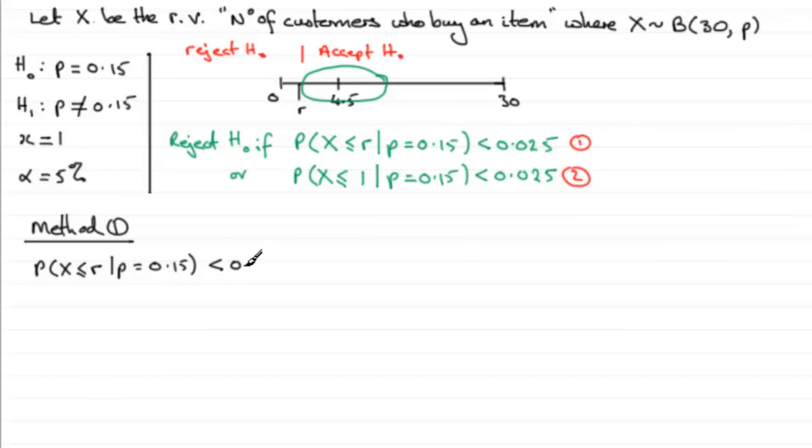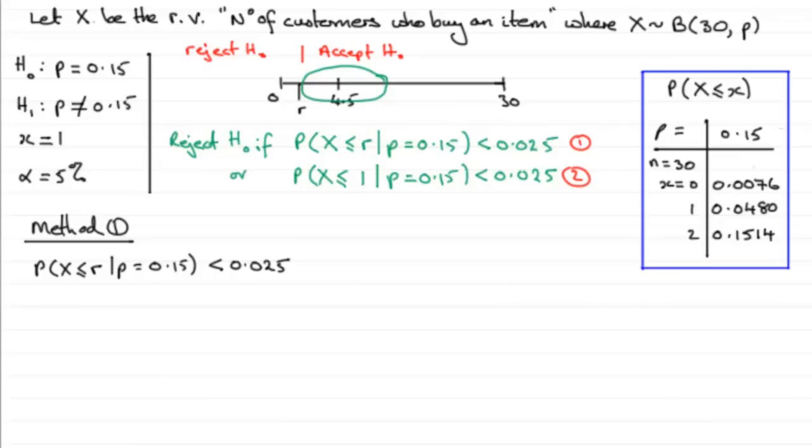We're going to check out what it would be if we say that that probability is less than 0.025. Now, because we're looking up less than or equal to a given value, then we can use our cumulative binomial distribution tables. These are tables that give us the probability of X being less than or equal to a given value.